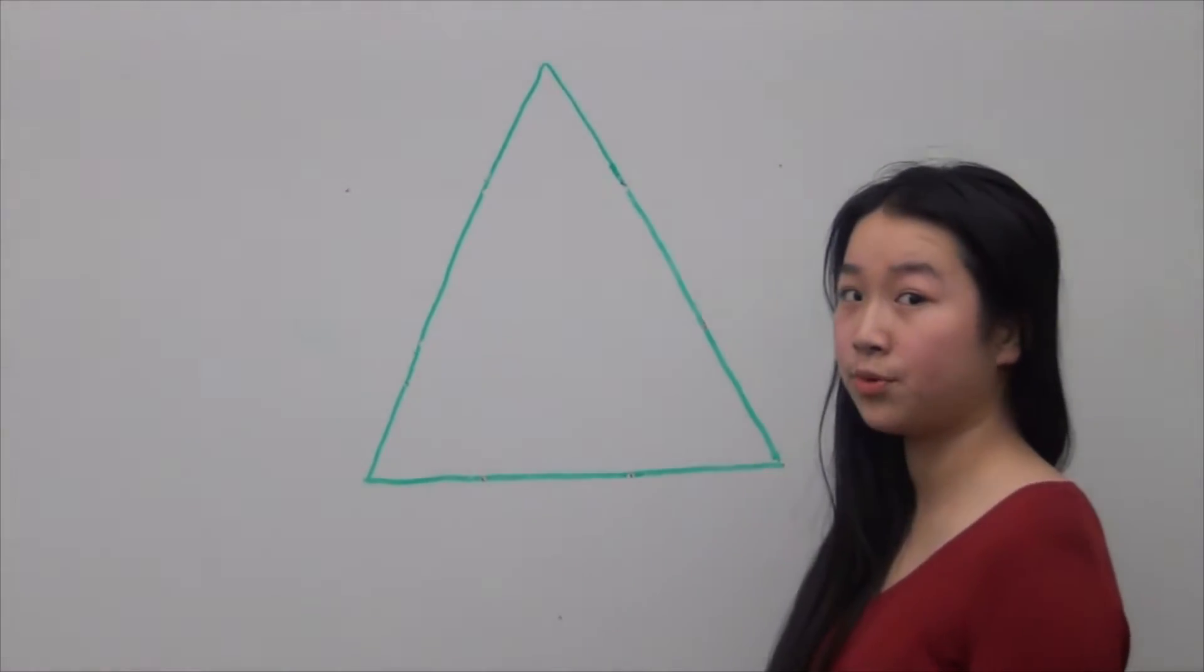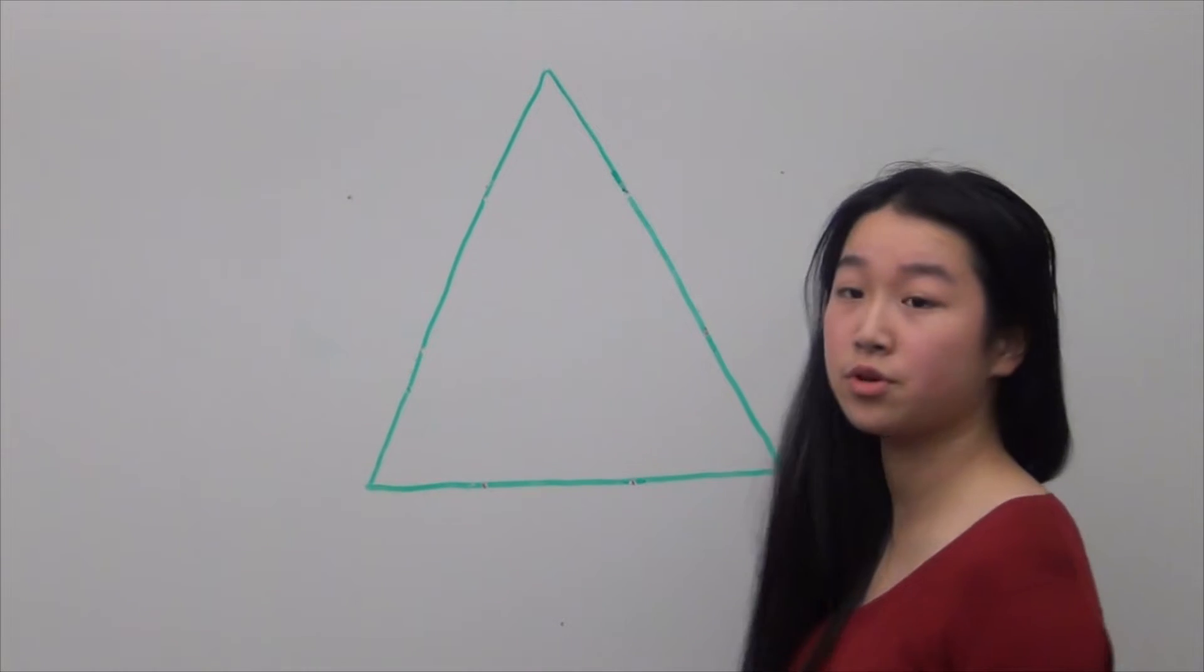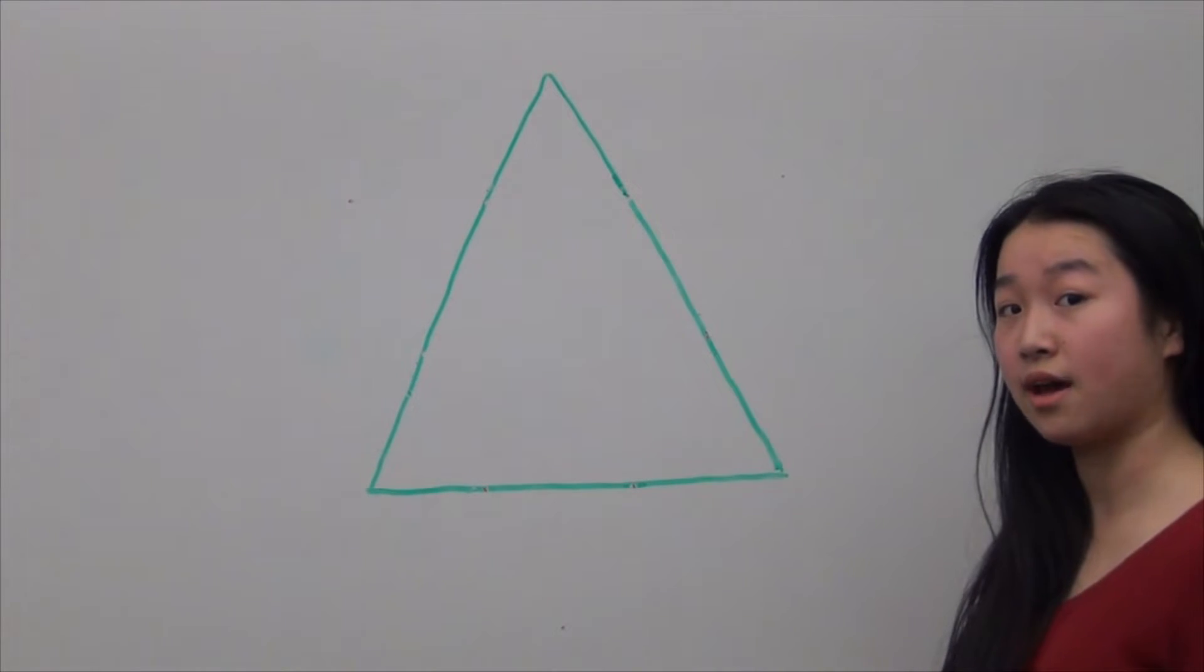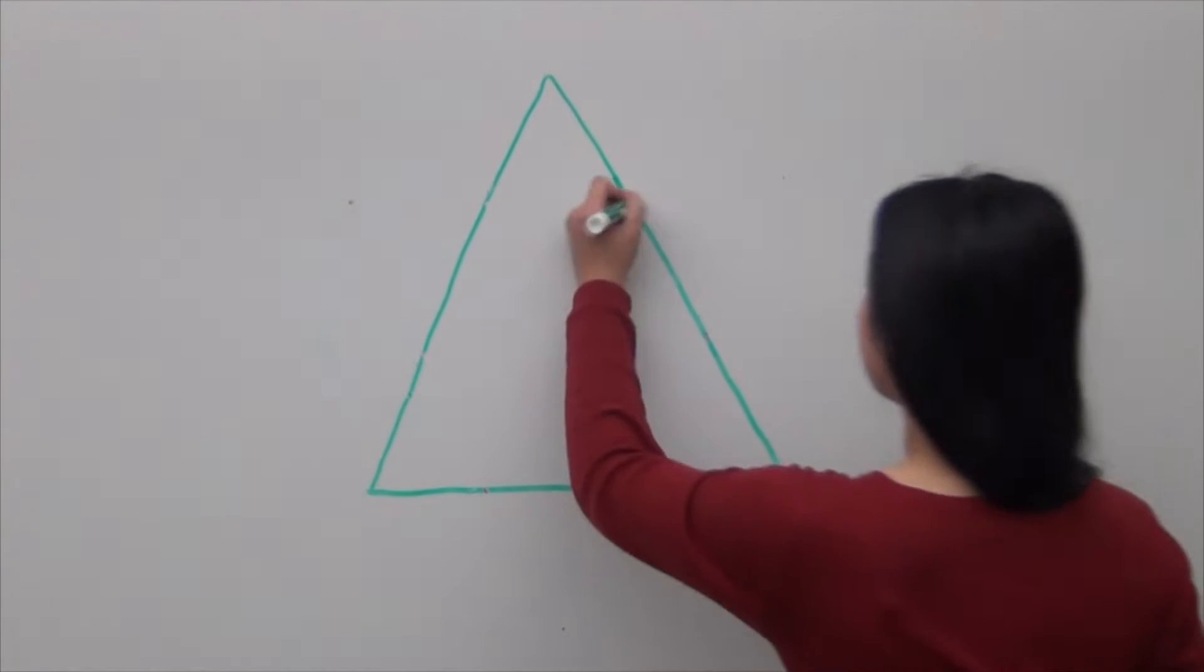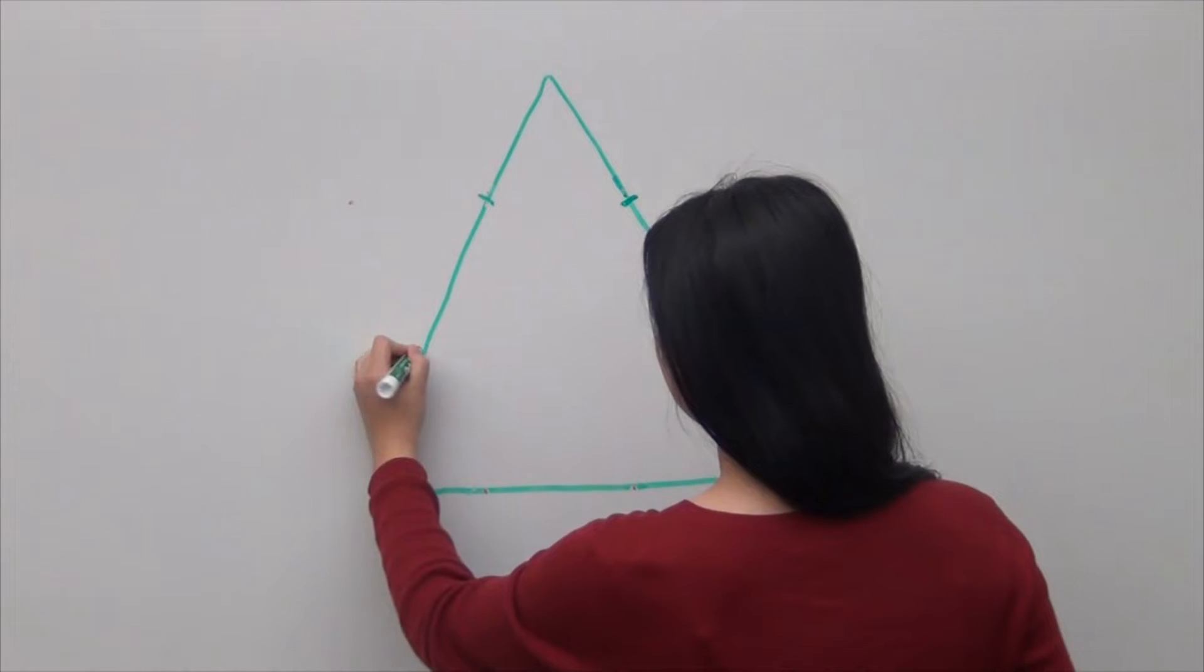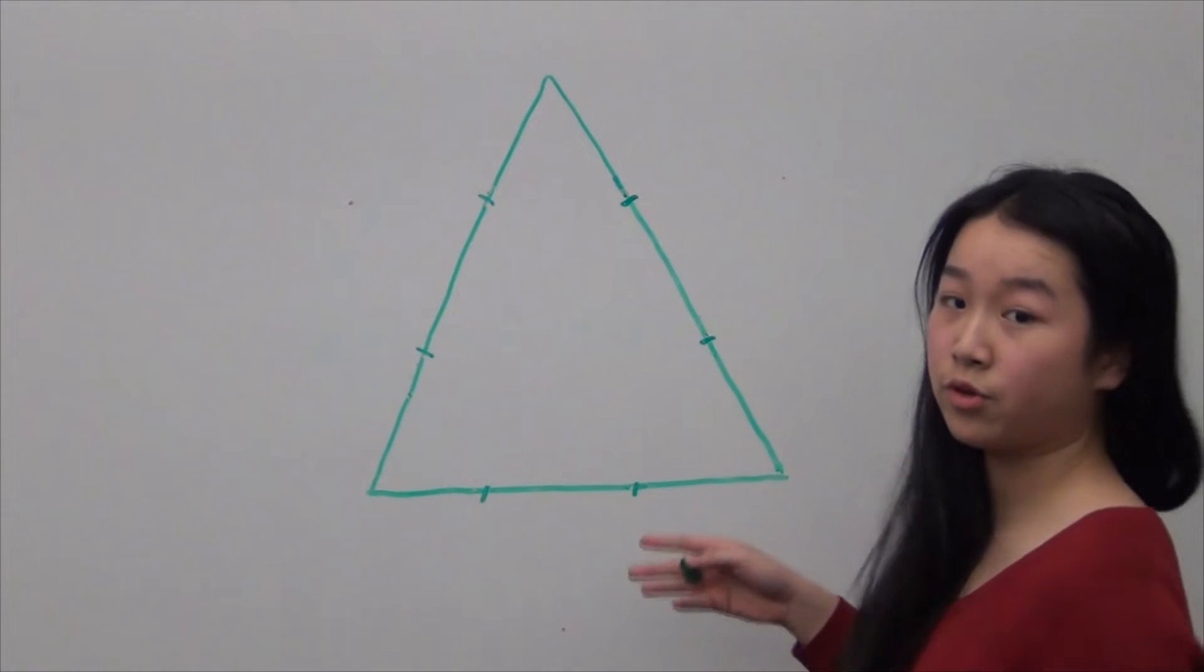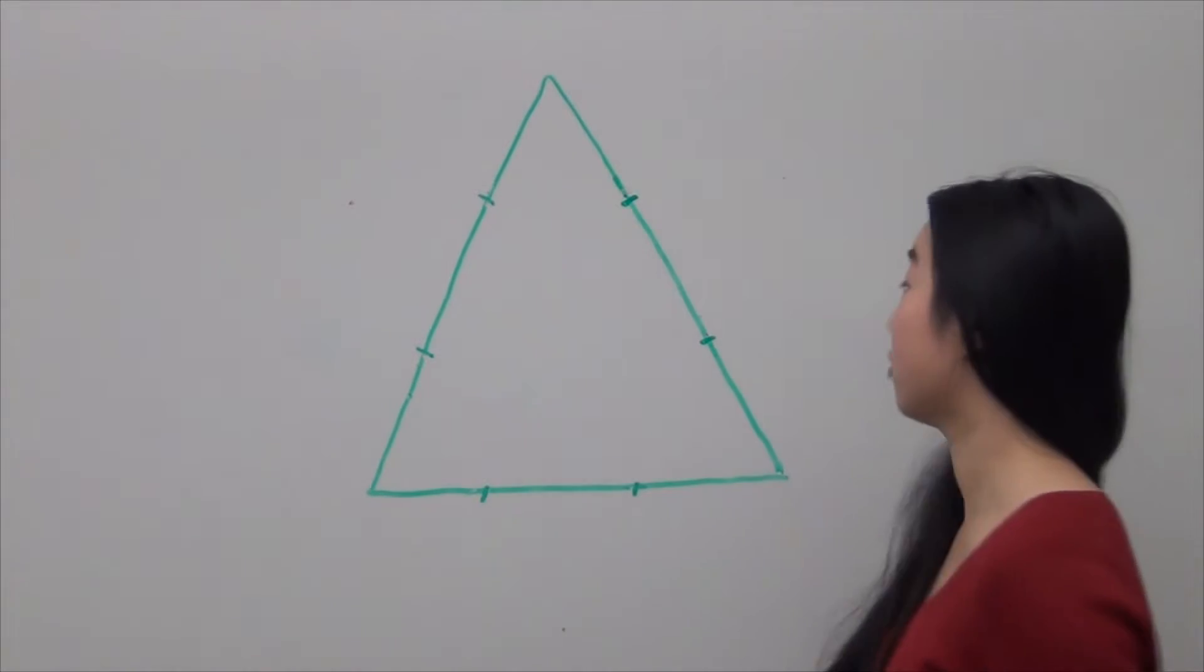First we show the perimeter of the Koch snowflake is infinite. To do so, we start with an equilateral triangle side length one. We divide each side into lengths of one-third. From each divided segment, we draw more equilateral triangles to create the next iteration.